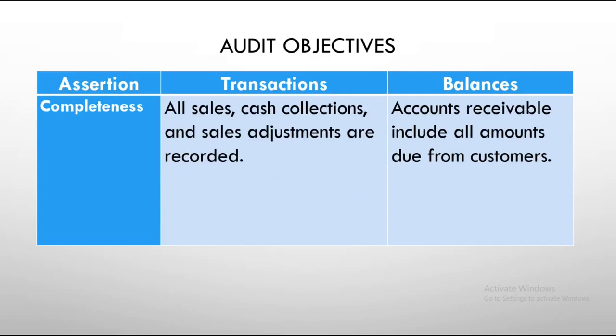For the completeness assertion, this is the opposite of existence or occurrence verification. All sales, cash collections, and sales adjustments are recorded. You start with the source document down to the books of accounts of the company. In terms of balances, accounts receivable include all amounts due from the customer, to assure that all transactions are recorded in the books.